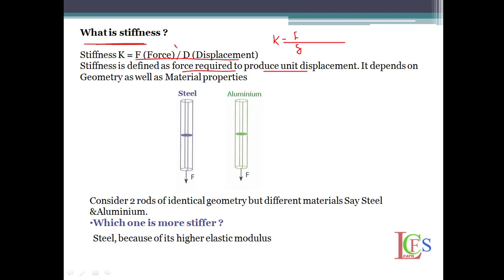Stiffness depends on geometry as well as material. Geometry means cross section. It depends on geometry as well as material properties of your unit.